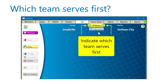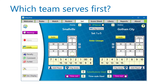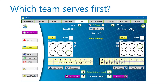When you select a radio button, lineup diagrams appear. These are NFHS lineup diagrams. But depending on your selections on the Rules tab, you could see diagrams for USA Volleyball or NCAA Women.